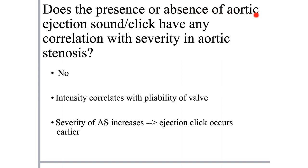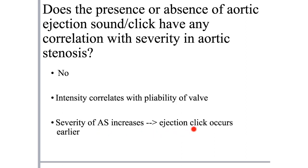Does aortic ejection sound correlate with severity of aortic stenosis? No. The intensity basically correlates with the pliability of the valve - if an ejection sound is present, the valve is pliable. As AS severity increases, the ejection click occurs earlier in systole and can merge with S1, similar to what was shown for pulmonary stenosis. Very severe AS leads to merging of the aortic click with S1, and you may not hear the ejection sound at all.